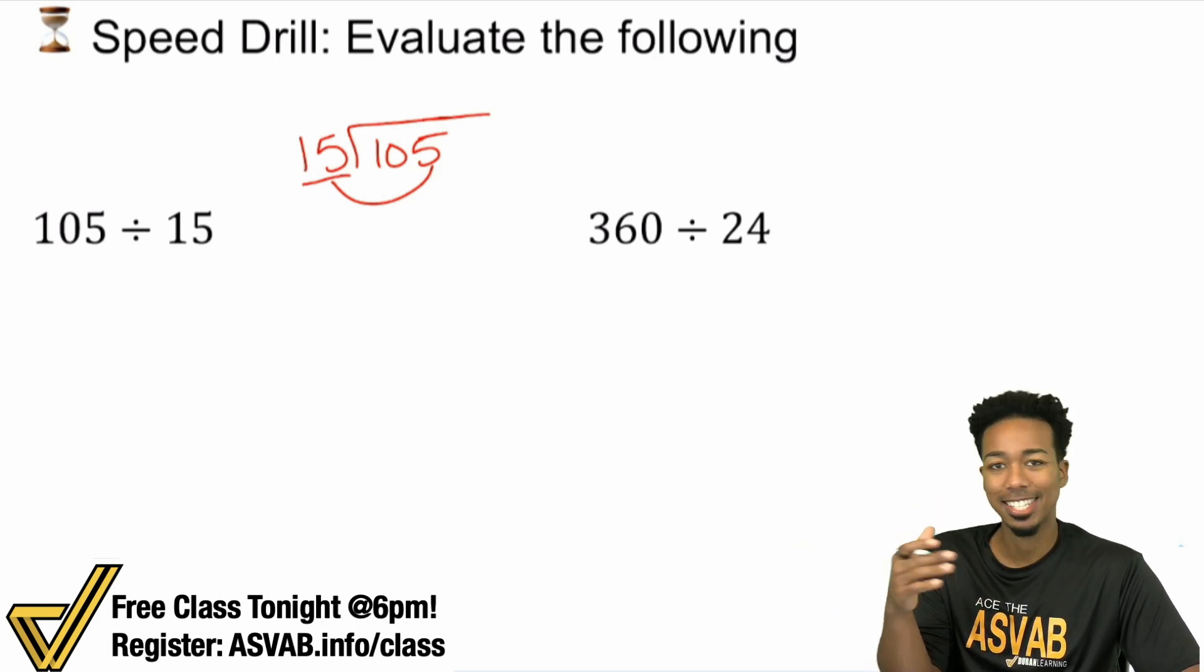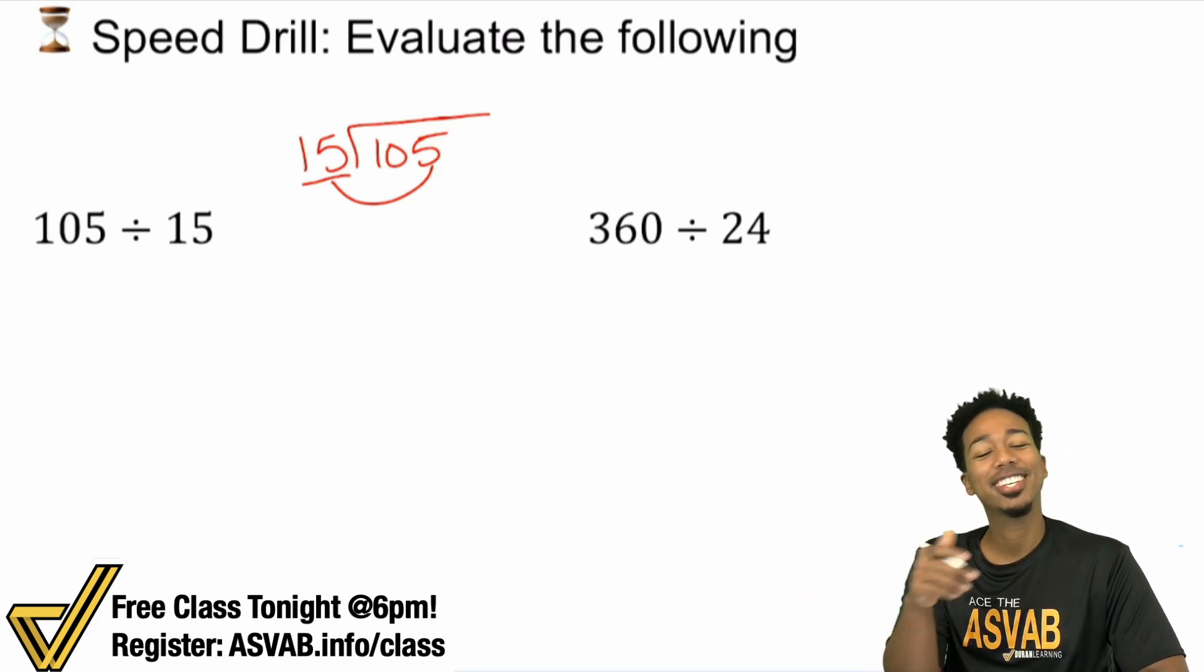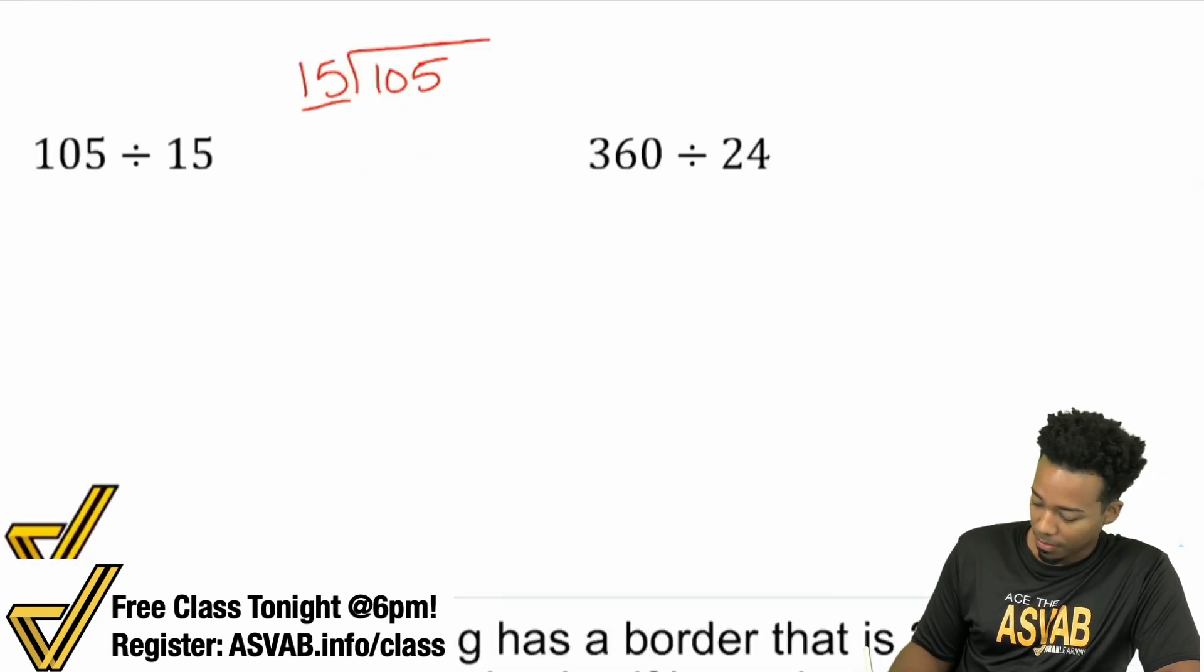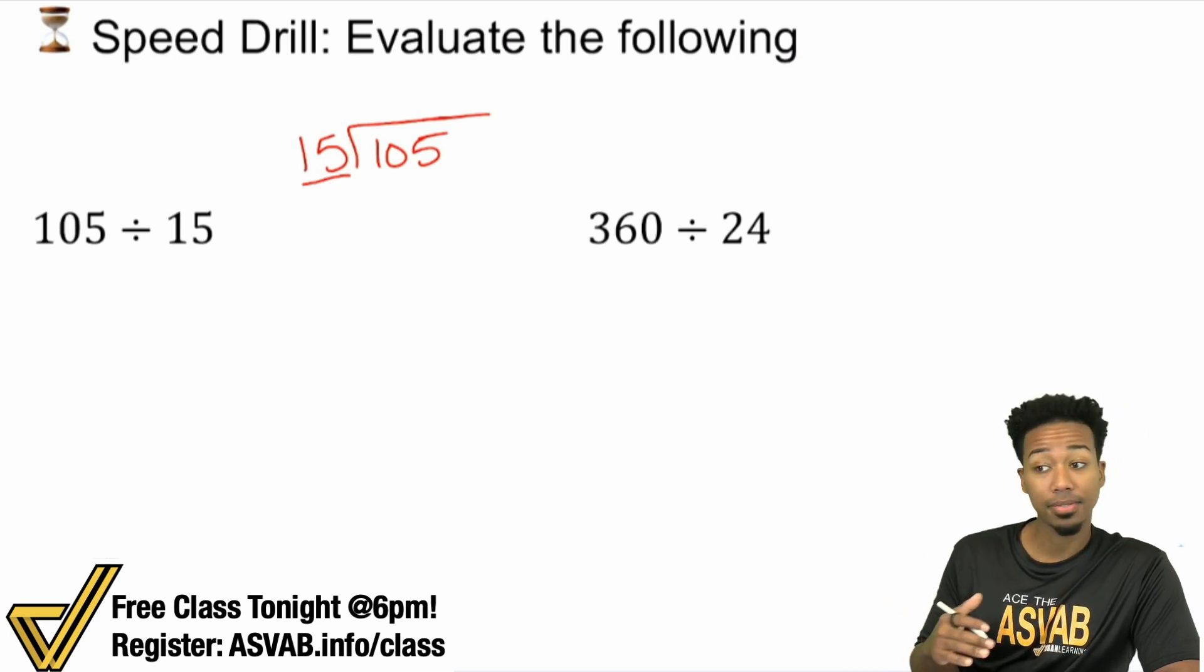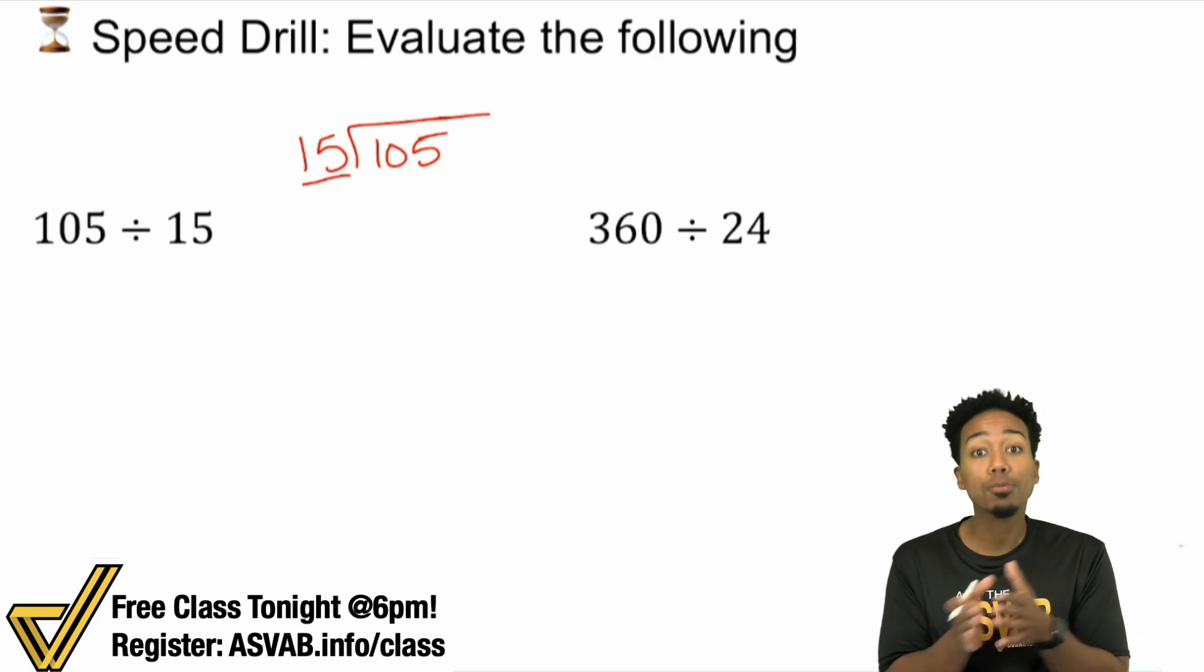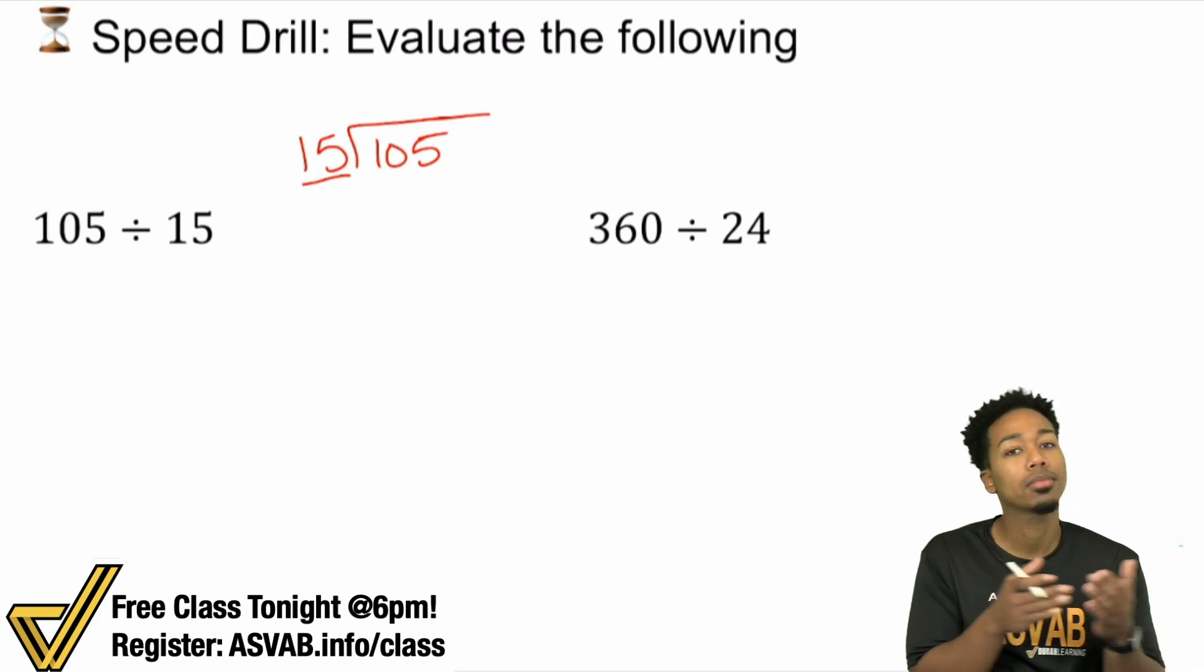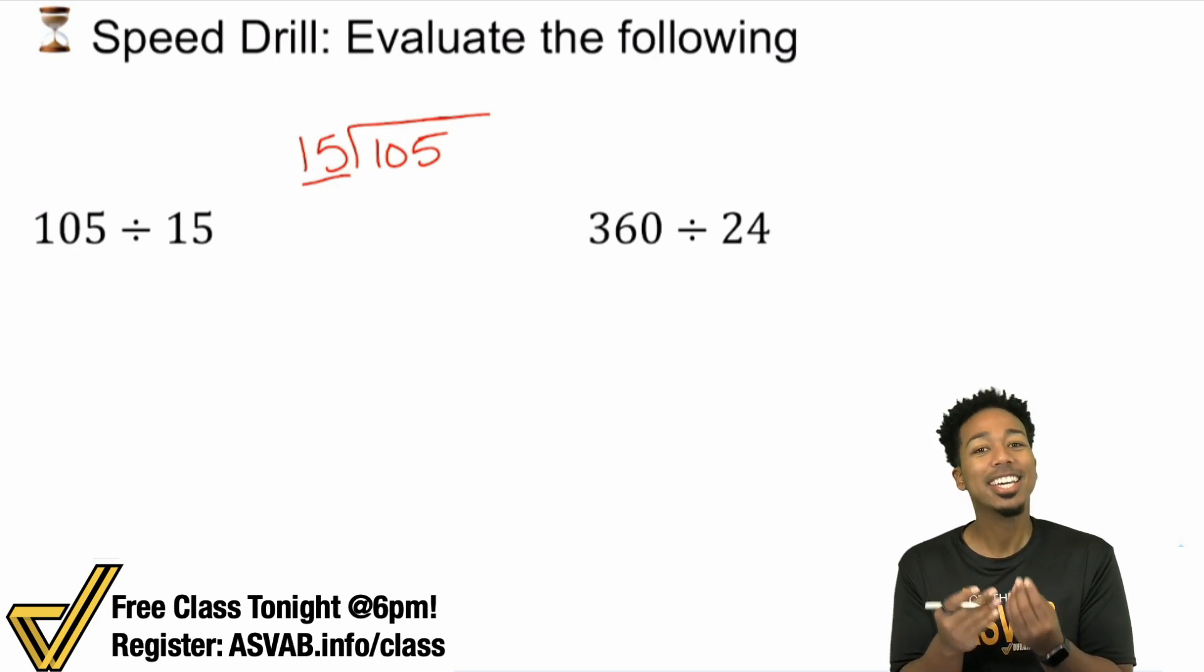And so instead of doing it like that, instead of taking the time to, you know, pretty much torture yourself, here's what you can do. The easier way is like this. Instead of dividing by 15, you can think of 105 divided by 15. You can think of it as 105 divided by five and divided by three.